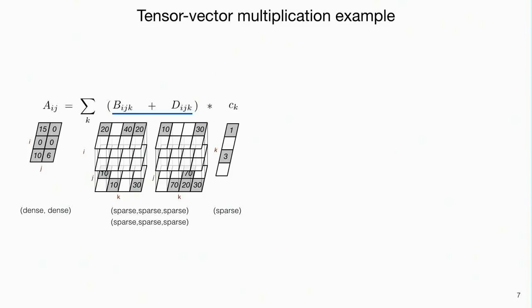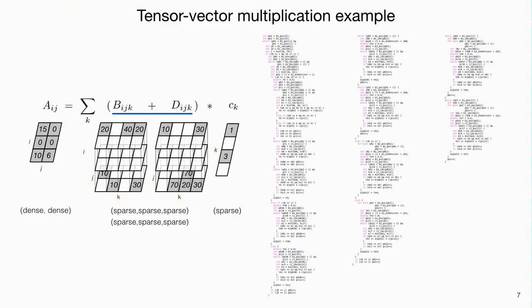If you want to add two sparse tensors and multiply by a vector in the same kernel, the code starts to blow up because of all the cases you have to consider. I'll show a straightforward theory for generating these cases.